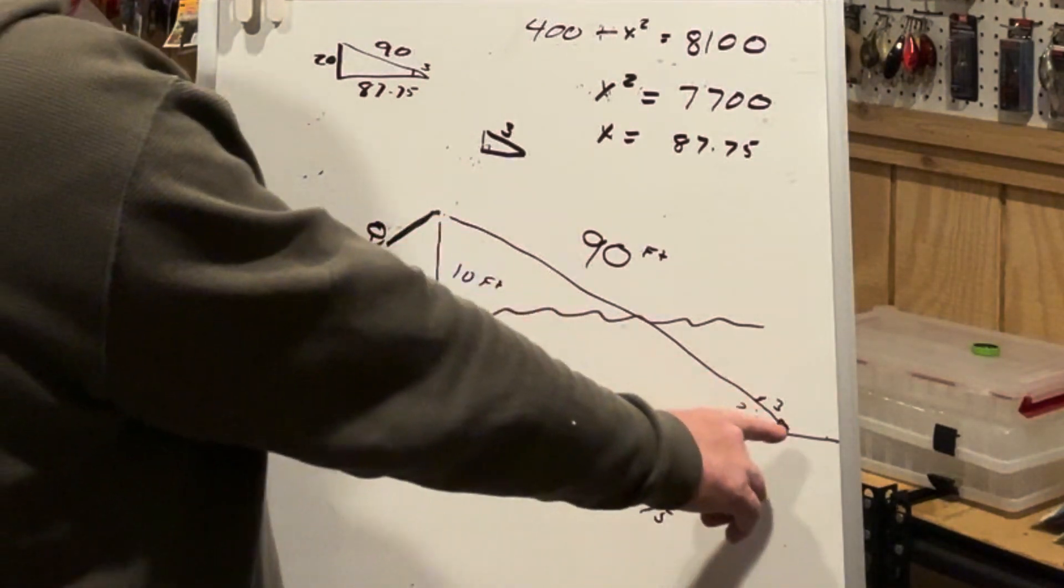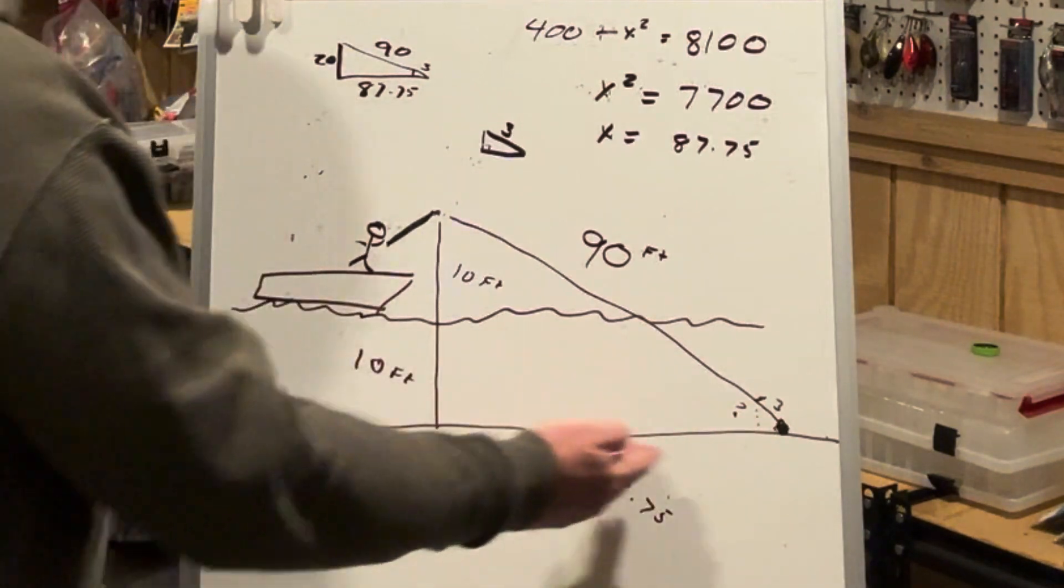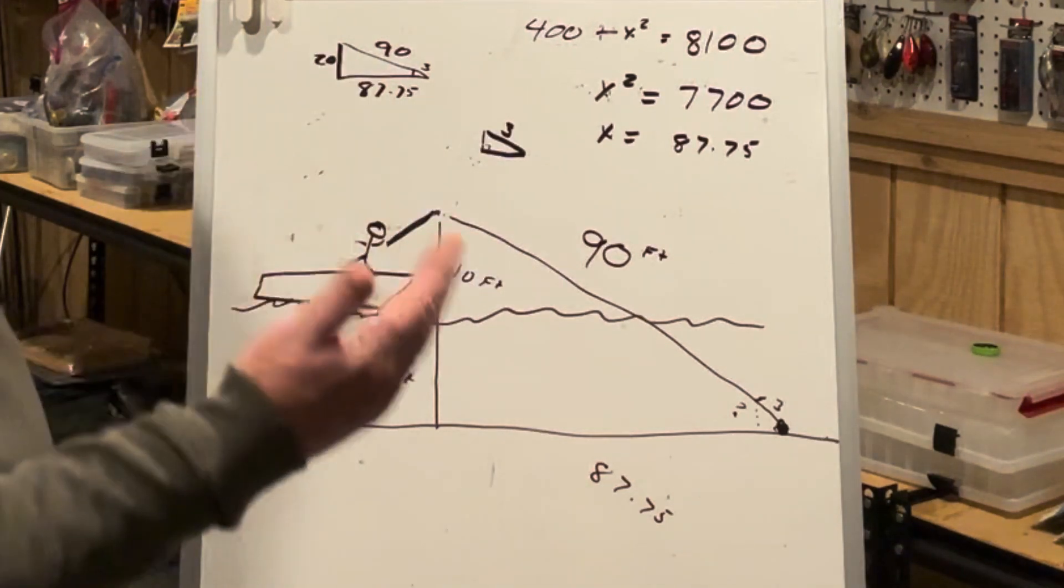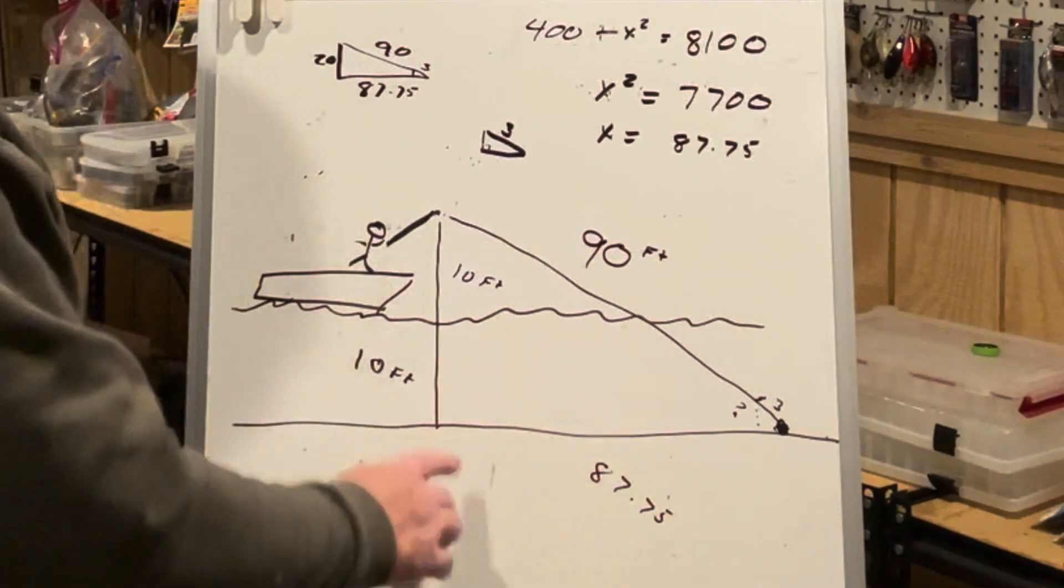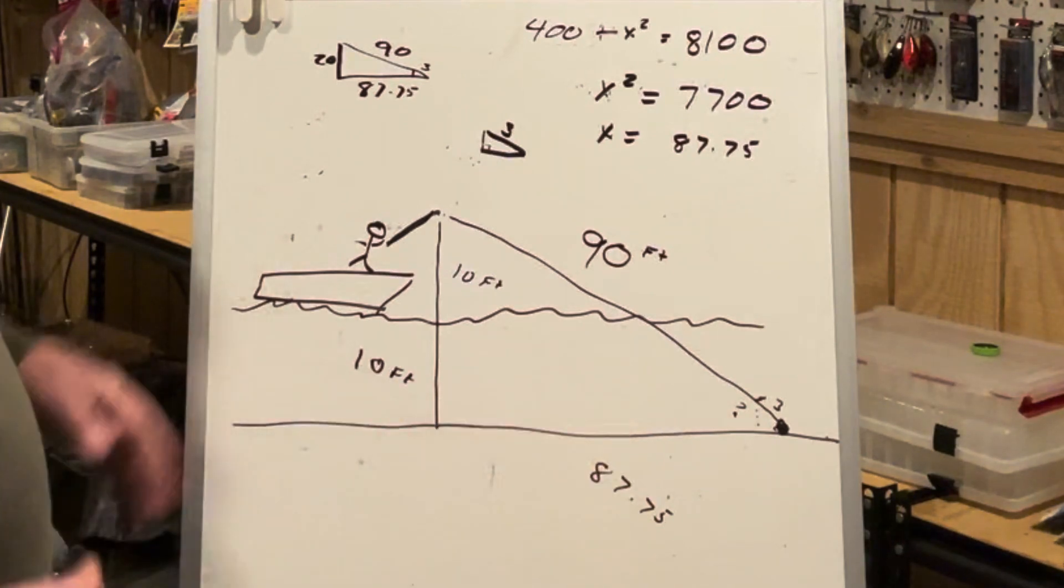And if I make a 90-foot cast, I need to know what that distance is of that angle. So using the Pythagorean theorem, A squared plus B squared equals C squared, I can find out that I covered about 87.75 feet of distance.